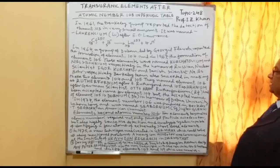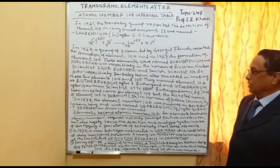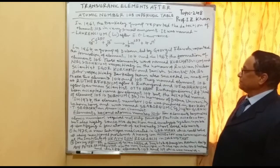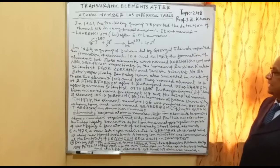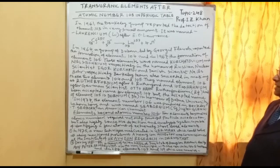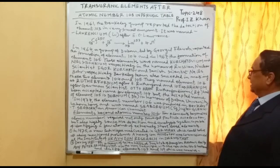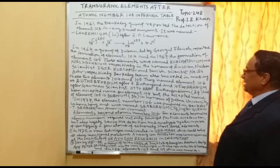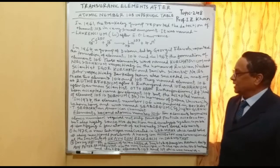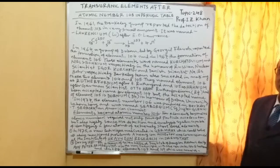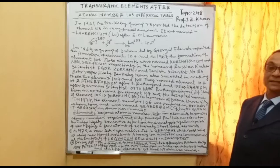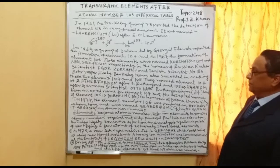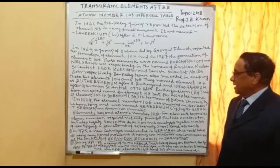The Berkeley team also succeeded in making these two elements, 104 and 105. They named element 104 Rutherfordium, in honor of scientist E. Rutherford.